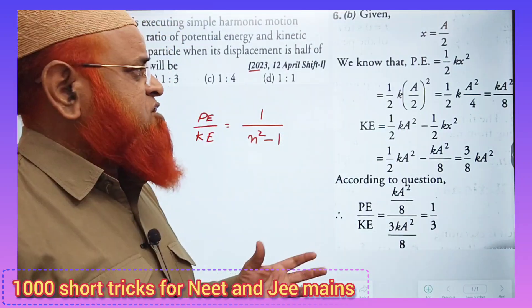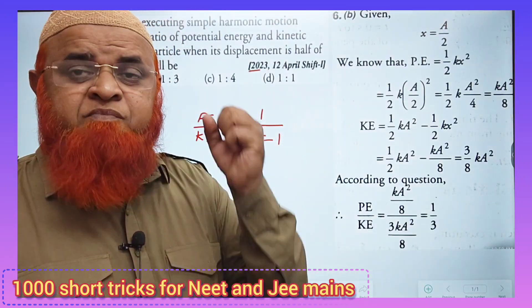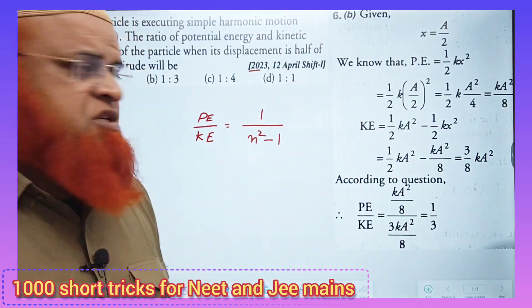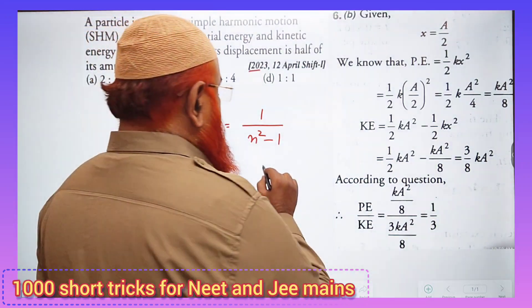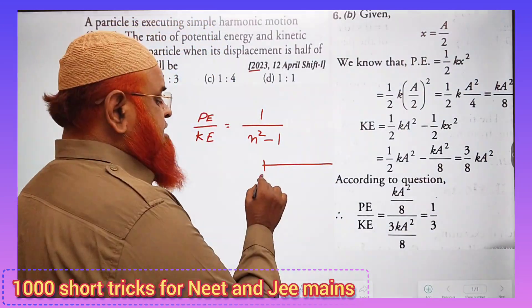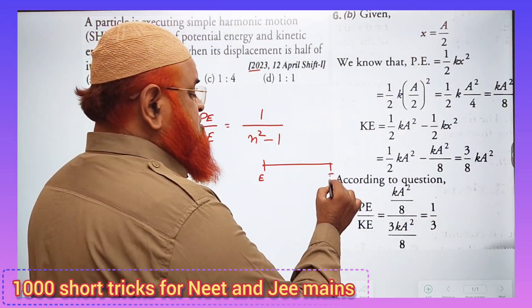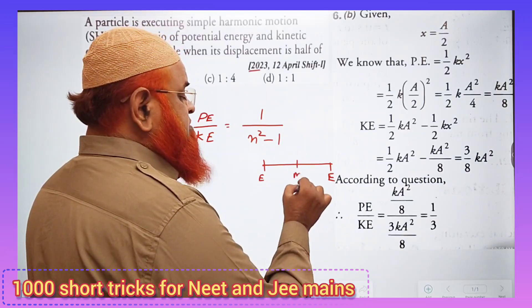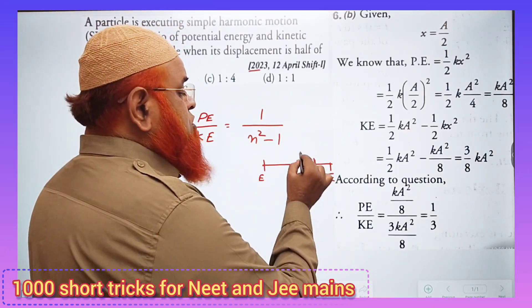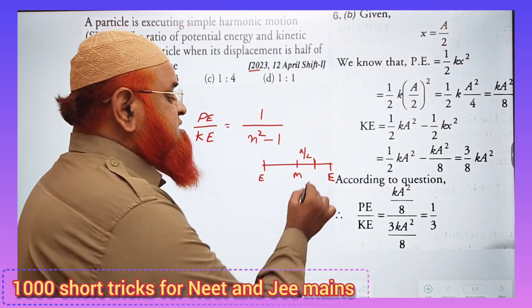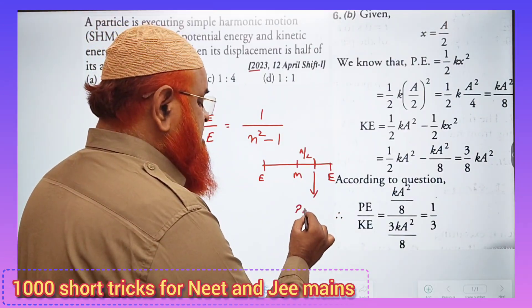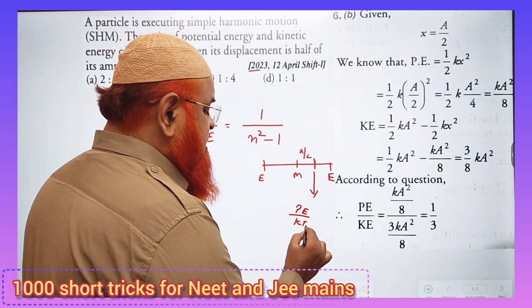So the question is asking us to find out the ratio of potential energy and kinetic energy. This is the extreme position, this is the extreme position, and this is the mean position. At a distance equal to half of the amplitude, he is asking us to find out the ratio of potential energy divided by kinetic energy.